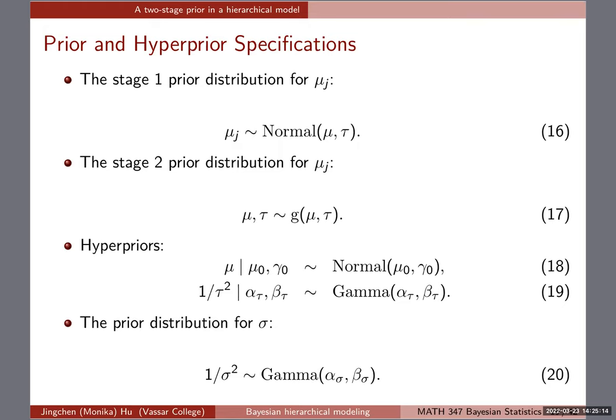Don't forget the prior for sigma. This is why we don't want sigma_j as well — the model would be quite complicated, though it's still doable. Even with this relatively simple model we have a number of equations. When working with JAGS, it's very important to write out the model specification including the sampling model, priors, and hyperpriors — then you can straightforwardly translate that into JAGS code. I like to put the model and the JAGS code side by side so you can see that they correspond to each other.